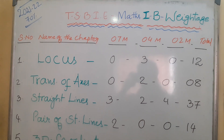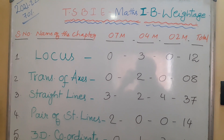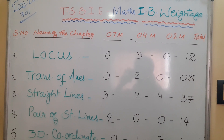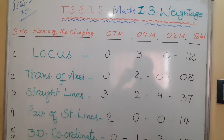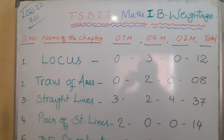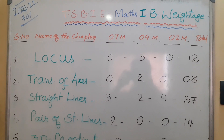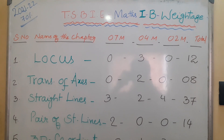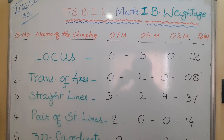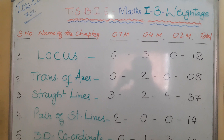Hello friends, welcome back to my channel. In this video, we are going to know about TSBIE Maths 1B chapter-wise weightage. TSBIE has 70% syllabus for this academic year — for this exam only, 70% syllabus is there. So, chapter-wise weightage — here we go now.